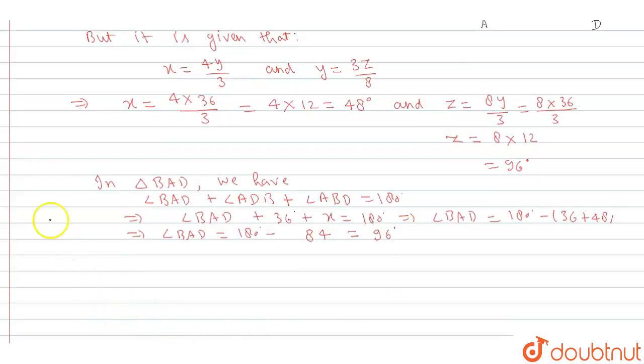Okay, so we can write thus, angle BCD is equal to z degrees is equal to 96 degrees. So, angle BAD is equal to 96 degrees. So, angle BAD is equal to 96 degrees.